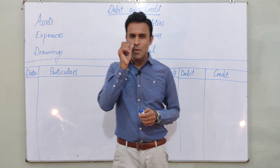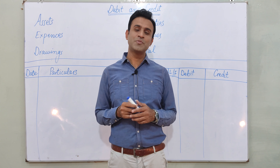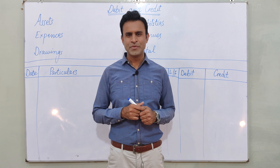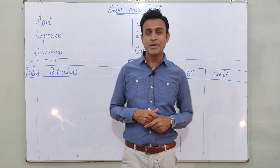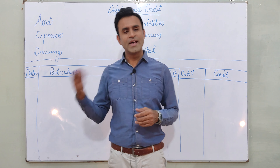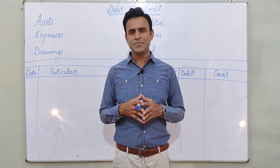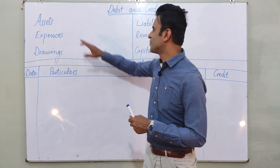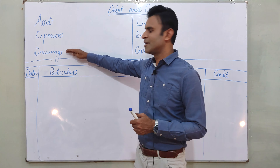We have talked about the modern American approach. The types of accounts were 6. In those 6 types of accounts, we have divided them into two groups of 3 and 3. The first group includes assets, expenses, and drawings.